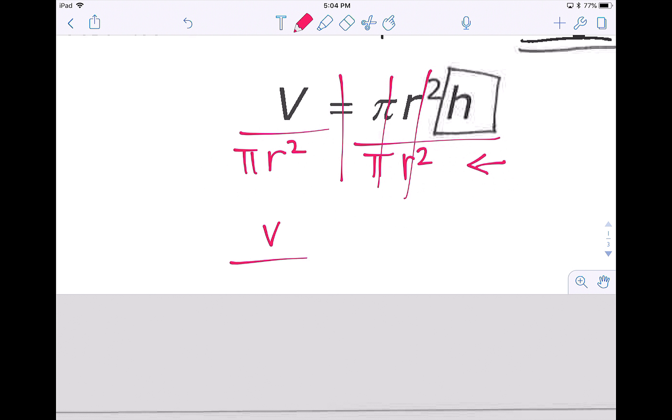On the left side, v is not repeated, pi is not repeated, and r squared is not repeated, so I can't do anything to make that look more simple because nothing is repeated. On the right side, I'm left with h. h is by itself, so I have completed that problem.